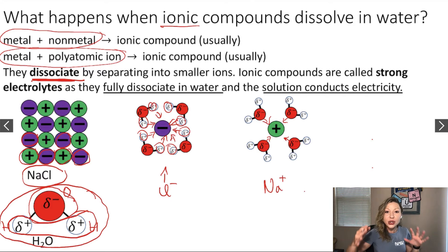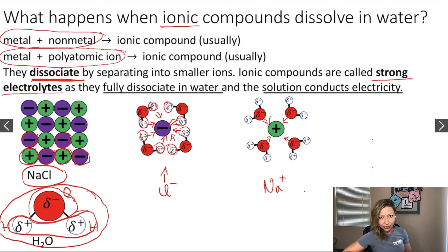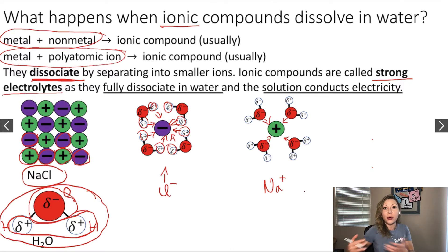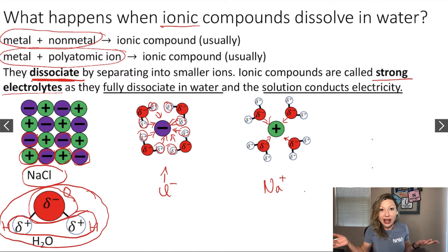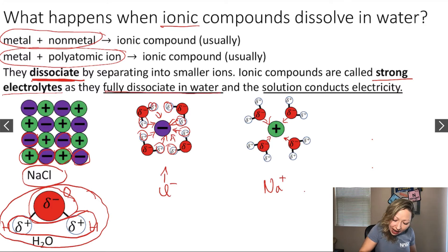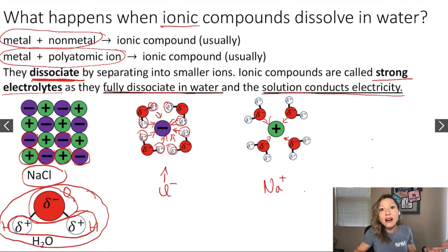Ionic compounds are called strong electrolytes. You've heard about electrolytes — after exercise it's a good idea to drink electrolyte solutions because when one sweats, the person can lose electrolytes, and drinking something like Gatorade might be beneficial. All electrolytes dissociate in water, and strong electrolytes fully dissociate in water, so the solution will conduct electricity.